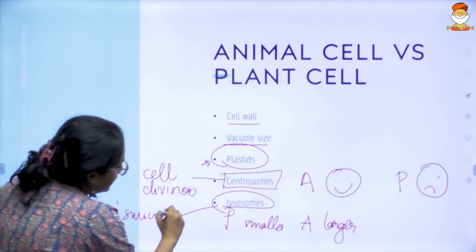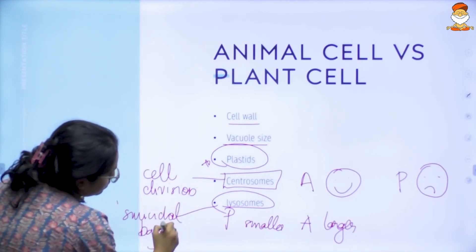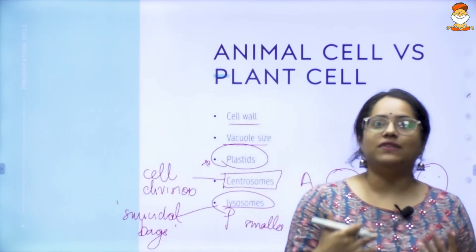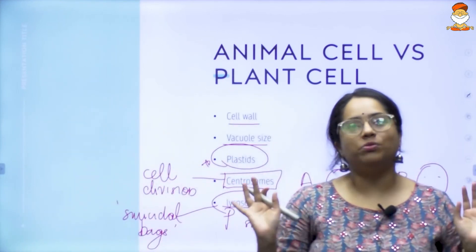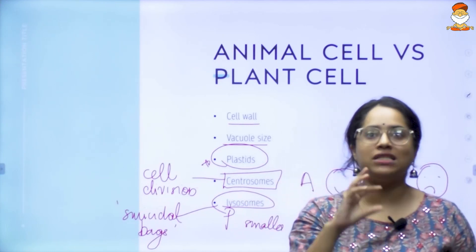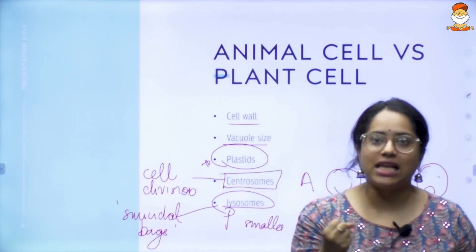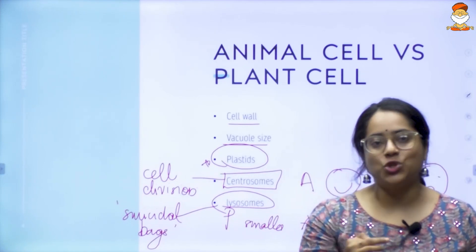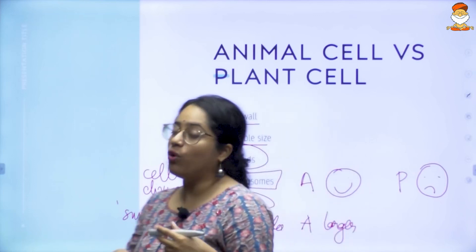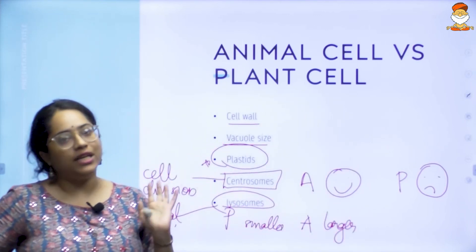Lysosomes have these enzymes in them. Whenever the cell needs to be destroyed, the lysosome is released and kills the cell. Both plant and animal cells have lysosomes — just the size is different.